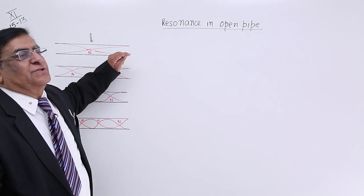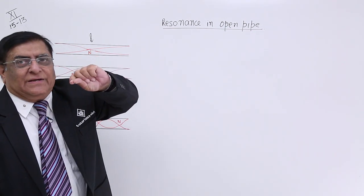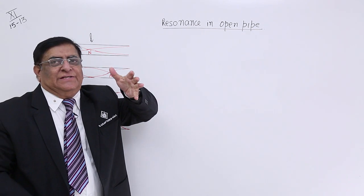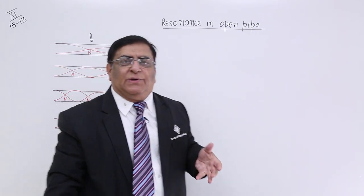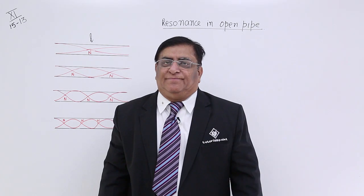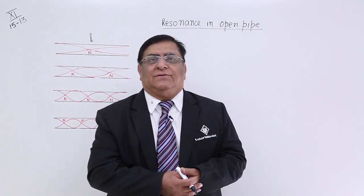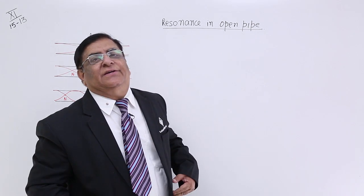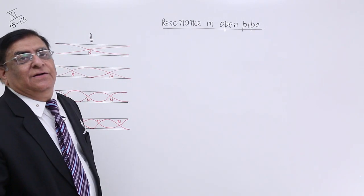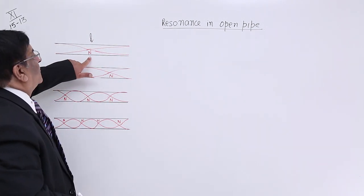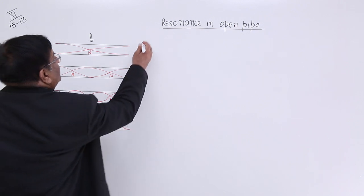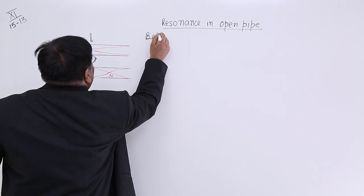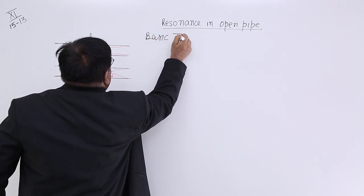And superposition takes place resonance. How do we know that superposition has taken place? Resonance will take place and we will hear a loud sound. That happens for the first time when we hear this sound then there is a stationary wave form in this way. So this gives us basic tone.